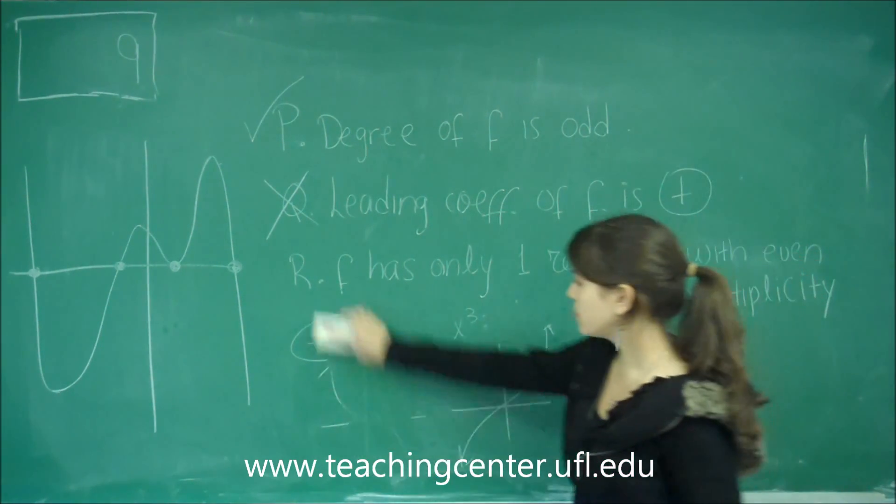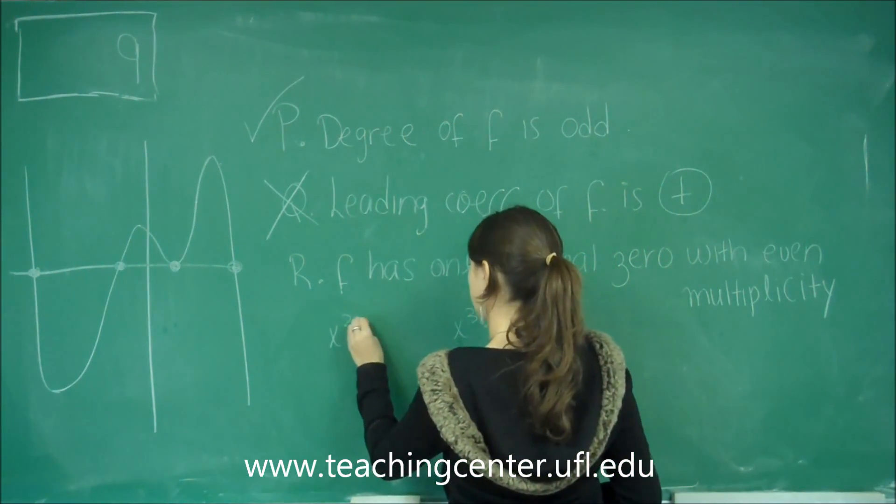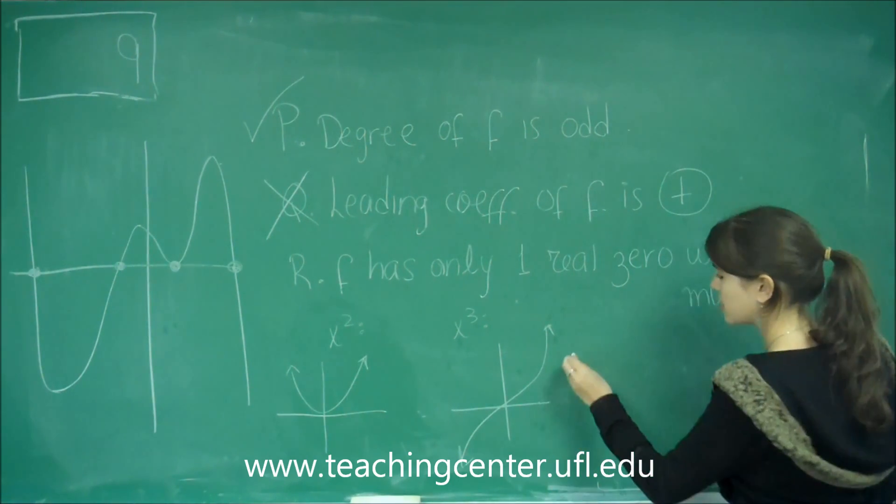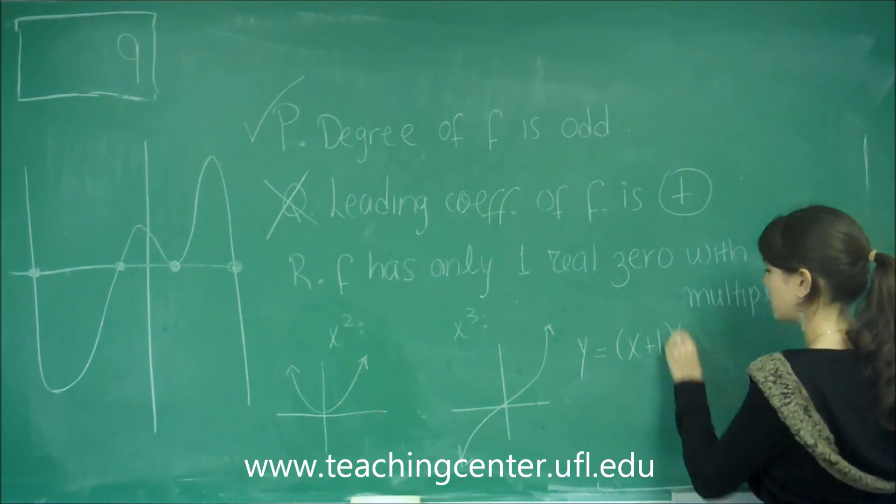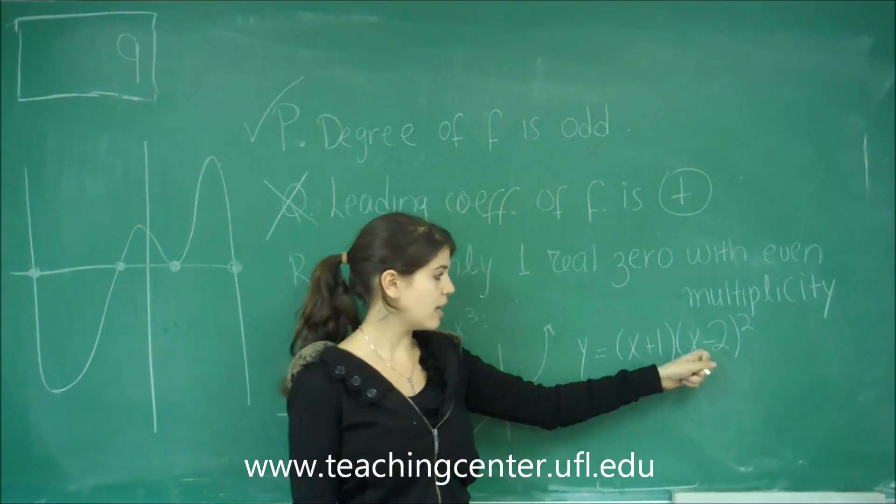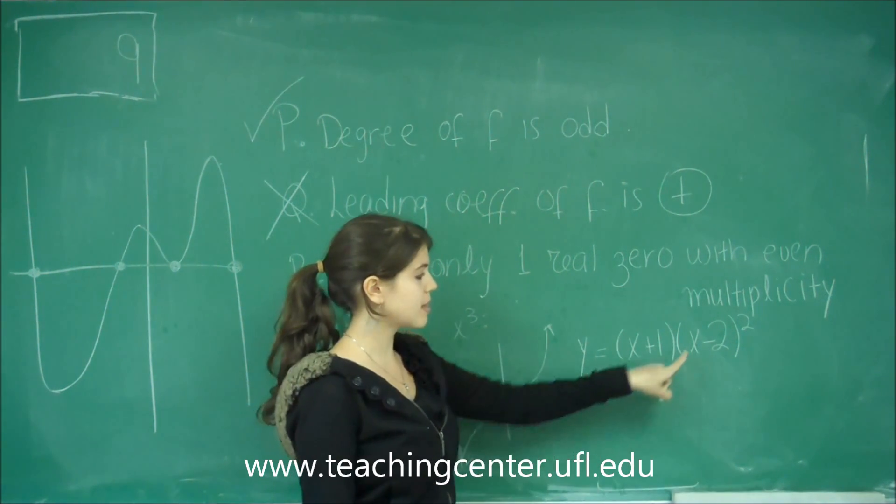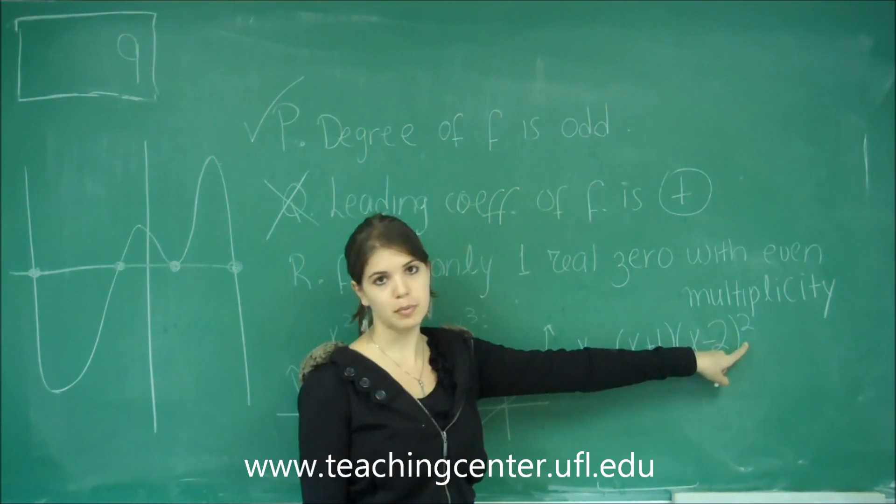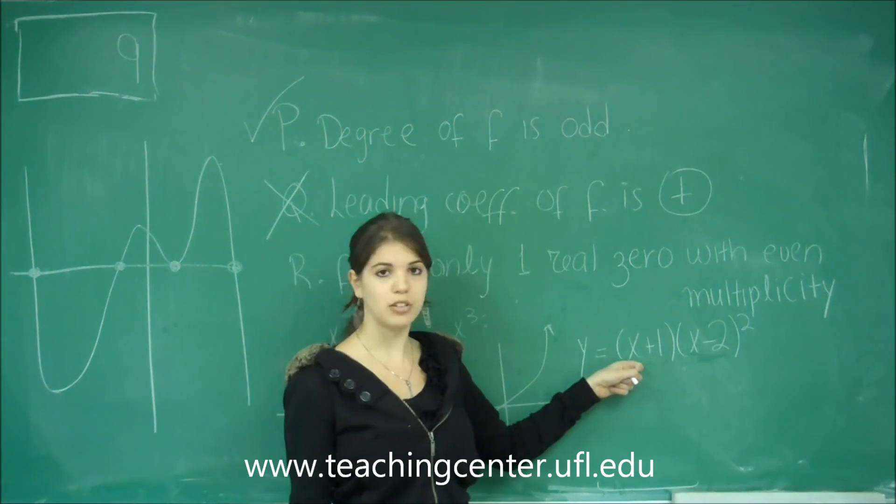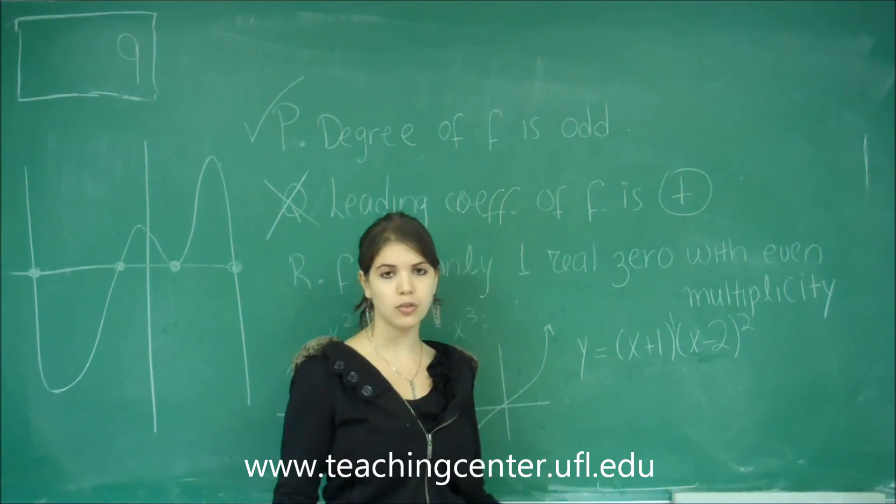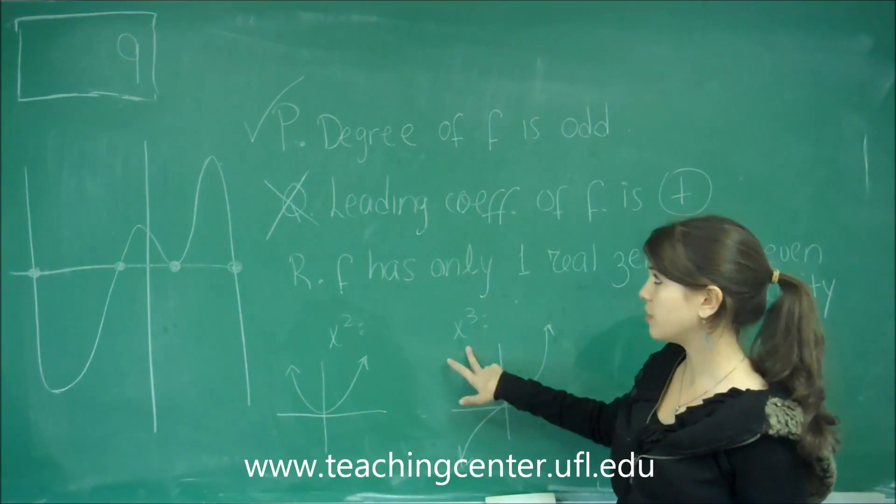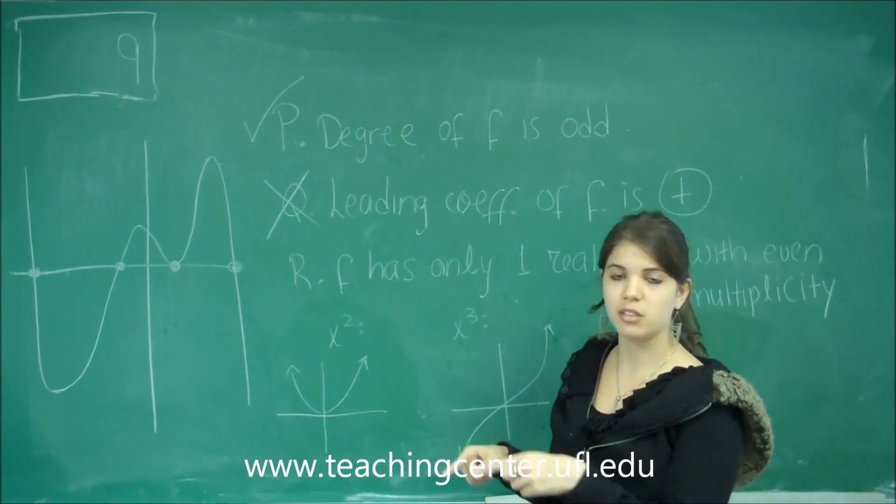We could use the graphs of x cubed and x squared to find this. Remember, when you're graphing a function, what multiplicity is, is, for example, let's say you have a function that is x plus 1 times x minus 2 squared. What this is telling me is that x plus 1 has odd multiplicity, x minus 2 has even multiplicity. That means that the solution to this, which is x equals 2, has even multiplicity. So, it'll only touch the graph and not cross it at x equals 2. And x equals negative 1, which is the solution to this, it'll actually cross because the multiplicity is 1, which is odd. It's not really the degree of a function. It doesn't mean that it's odd because the degree of the function was odd. It just means that that zero, what power is it raised to?